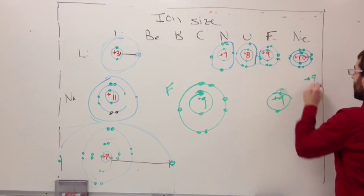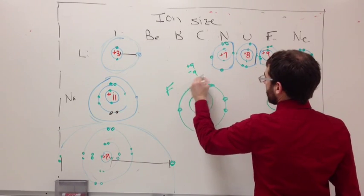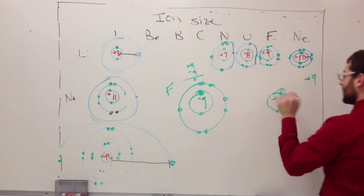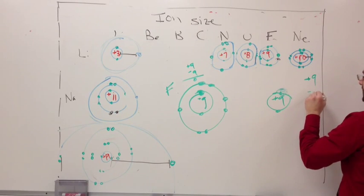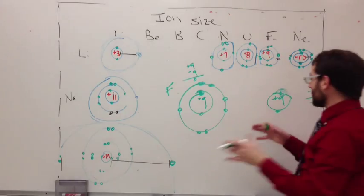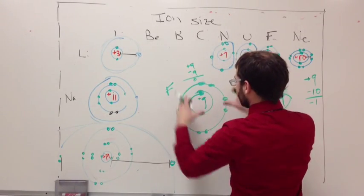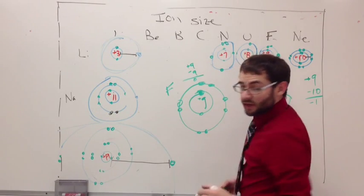Right now, we have plus nine, and we have minus nine, so this is plus and minus nine, meaning it's neutral. Once we go to this one, we're going to have a minus ten, so it's a negative one charge. The protons can't hold them all just as tightly as they did for this one when they have an extra electron in there.